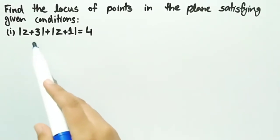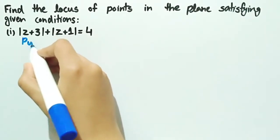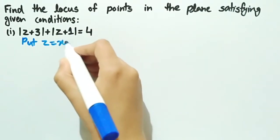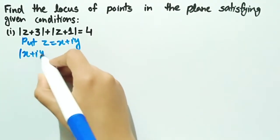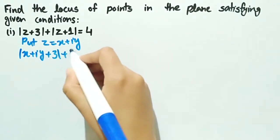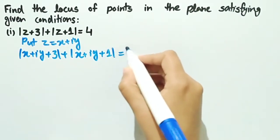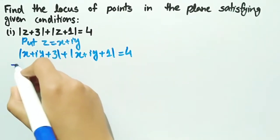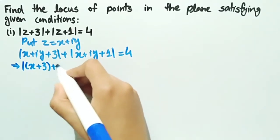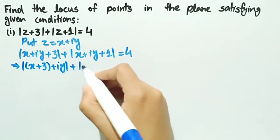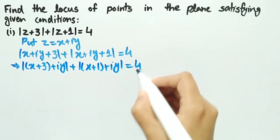The first one is: mod of z plus 3, plus mod of z plus 1, equal to 4. We will put z equal to x plus iota y and we get mod of x plus iota y plus 3, plus mod of x plus iota y plus 1, equal to 4. Rearranging, we write this as mod of x plus 3 plus iota y, plus mod of x plus 1 plus iota y, equal to 4.